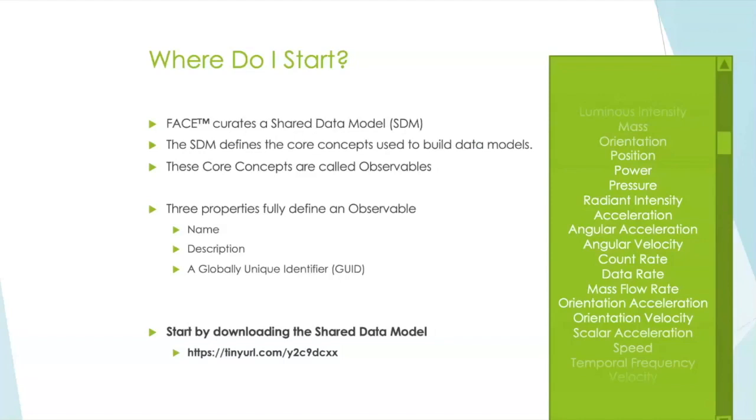There's really two sets of core concepts in there, but the primary one is called an observable. If you look in the green box on the right, I have a list of observables presented there. These really are the core concepts that we use to build out our data model. These are the things that we talk about.